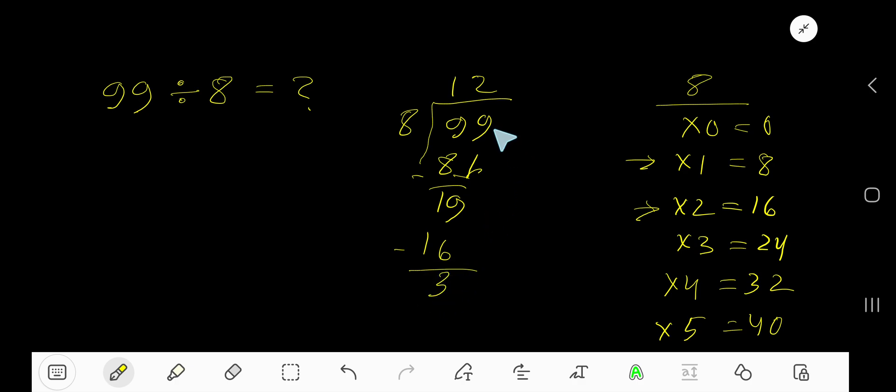Now convert this 99 into a decimal number by adding zeros. Bring down the first 0. Before this 0 there is a decimal, so the decimal must come to the question. 8 goes into 30 how many times?